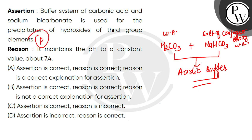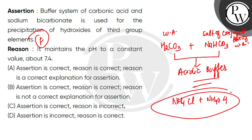This is false. The third group elements are precipitated using the system NH4Cl and NH4OH, which is a basic buffer — not an acidic buffer. This is why the assertion is false. But the reason is not wrong — the carbonic acid and sodium bicarbonate system does give a constant pH of about 7.48, so the reason is true.